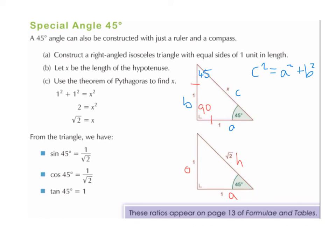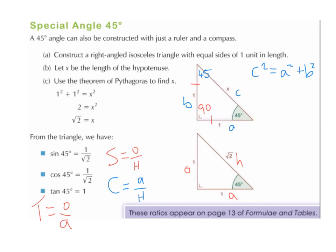Sin of 45 degrees equals opposite over hypotenuse (SOH), so sin 45 equals 1 over root 2. Cos of 45 degrees equals adjacent over hypotenuse (CAH), so cos 45 equals 1 over root 2. Tan of 45 degrees equals opposite over adjacent (TOA), so tan 45 equals 1 over 1, which equals 1.